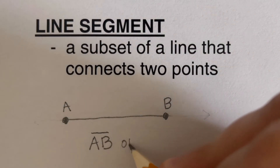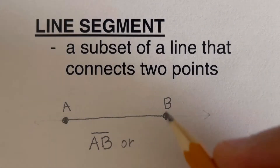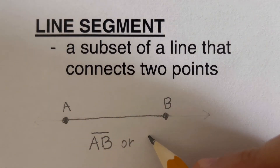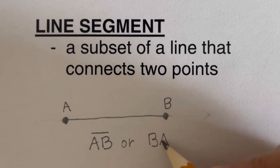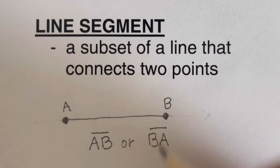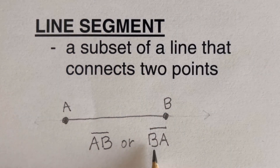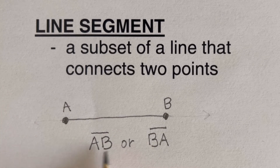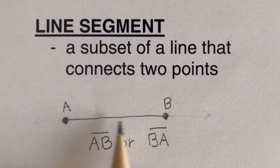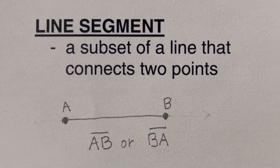This can also be written the other way: BA with a line segment symbol on top, read as line segment BA. Both of these names refer to the same line segment.